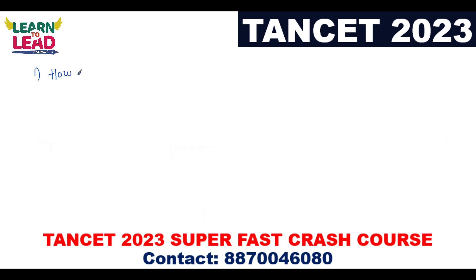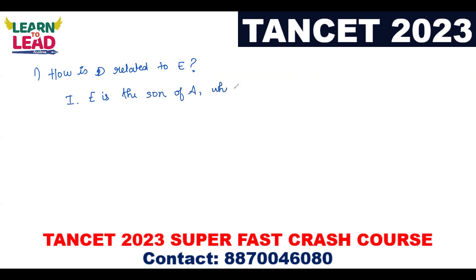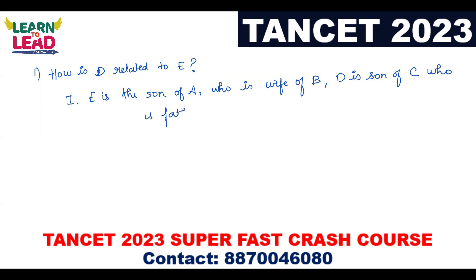First question is related to blood relations. How is D related to E? Statement one: E is the son of A, who is the wife of B. And D is the son of C, who is the father-in-law of B.